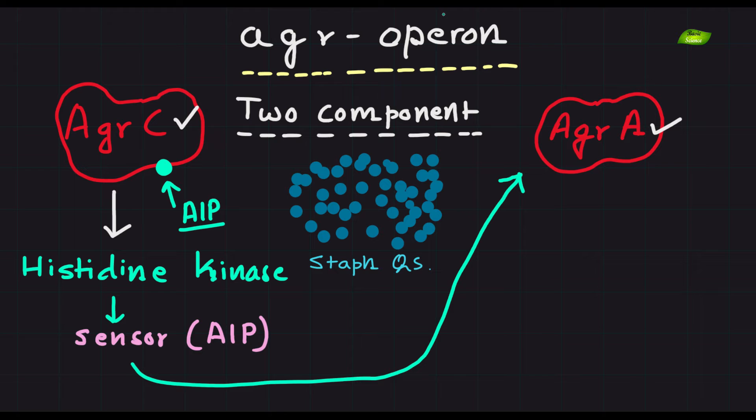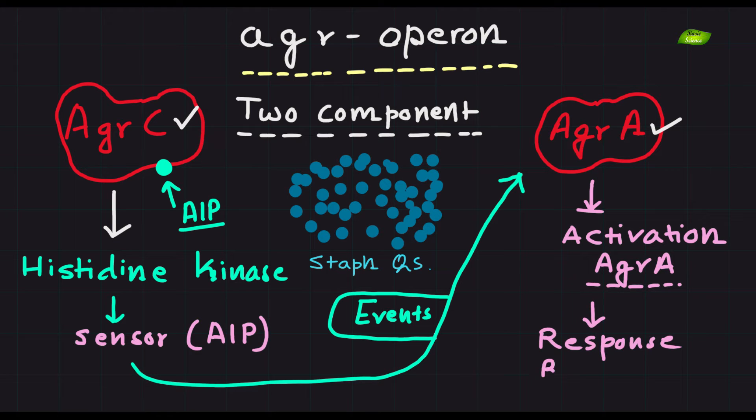Upon binding of AIPs to AGRC, a series of autophosphorylation and phosphotransfer events occur, resulting in the activation of AGRA, the response regulator.